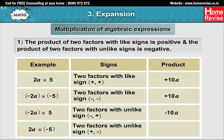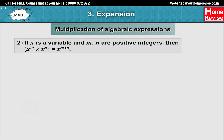Rule 2: If x is a variable and m, n are positive integers, then x raised to m into x raised to n is equal to x raised to m plus n. For example, x raised to 5 into x cubed is equal to x raised to 5 plus 3, which equals x raised to 8.